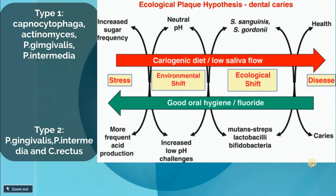Regarding bacterial pathogens in diabetics: in Type 1, we most commonly find Capnocytophaga, Actinomyces, P. gingivalis, and P. intermedia. In Type 2, we have P. gingivalis, P. intermedia, and Serratia. All of these are mainly gram-negative bacteria, which affect the progression of periodontal disease. In diabetic patients, there is a qualitative change in bacteria types, shifting from more gram-positive to more gram-negative organisms.